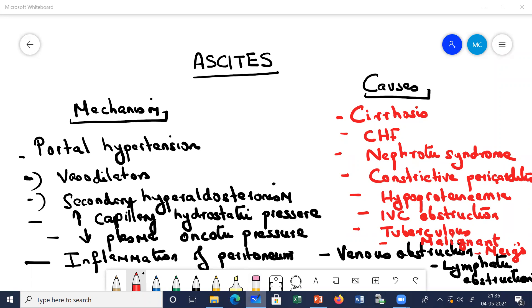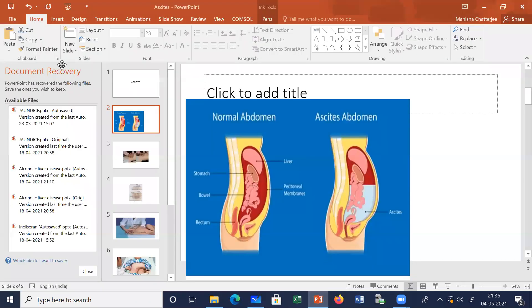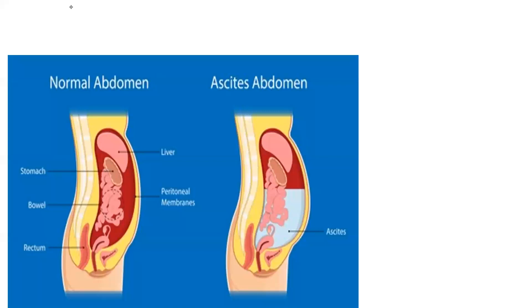Let us see what we understand by ascites. Look at this diagram of a normal abdomen. This is the peritoneal cavity. What has happened here is that there has occurred the accumulation of excess fluid within this peritoneal cavity. So this accumulation of excess fluid in the peritoneal cavity is called ascites.